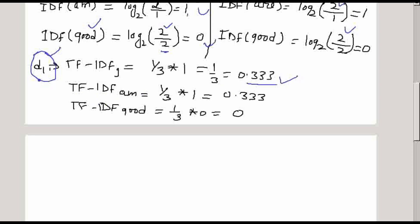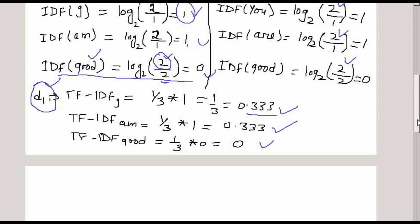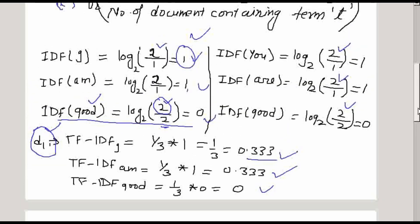Likewise, the TF-IDF for 'am' in D1 is 1/3 multiplied by 1, which is also 0.33. The TF-IDF for 'good' in D1 will be 1/3 multiplied by 0, because the IDF of 'good' is 0 since 'good' appears in both documents. This gives a TF-IDF score of 0 for 'good', showing it carries no distinguishing importance across documents.